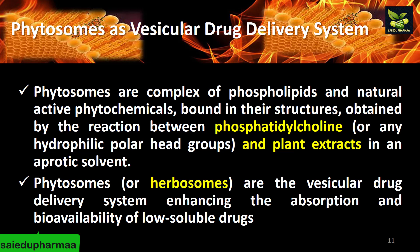Next come phytosomes. Phytosomes are complexes of phospholipids and natural active phytochemicals. They are prepared by the reaction between phosphatidylcholine or any hydrophilic polar head group and plant extracts in an aprotic solvent. They are also named herbosomes. They are vesicular drug delivery systems which enhance the absorption and bioavailability of poorly soluble drugs.